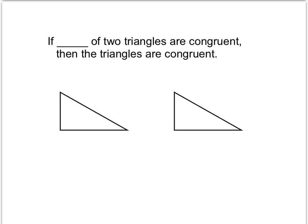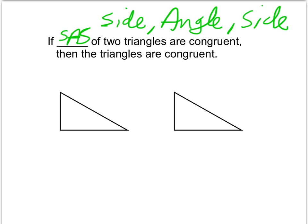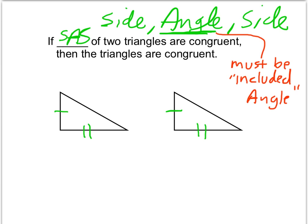Another theorem we have to prove that triangles are congruent is called the SAS theorem. SAS stands for side-angle-side. We need two pairs of sides — let's say these sides were congruent, and these sides were congruent — and then we need an angle to be congruent as well. However, that angle must be the included angle, meaning the angle must touch the two sides that we know about. If we know that these two angles were congruent, then we could prove that the triangles are congruent.